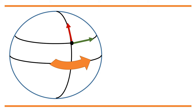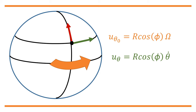Let us first find out what the velocity is. Since the sphere is rotating with angular velocity Ω, its velocity component on the θ coordinate with respect to a rest frame is R cos(φ) Ω. Its velocity component on the φ coordinate with respect to a rest frame is 0. Meanwhile, the velocity component on the θ coordinate of the object with respect to the rotating sphere, u*_θ, is R cos(φ) θ̇, and that on the φ coordinate, u*_φ, is R φ̇.